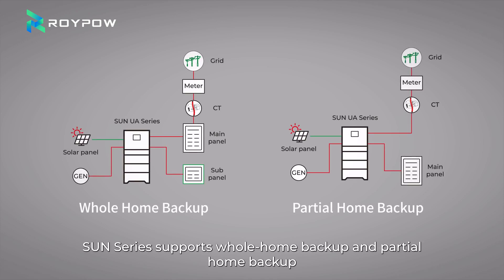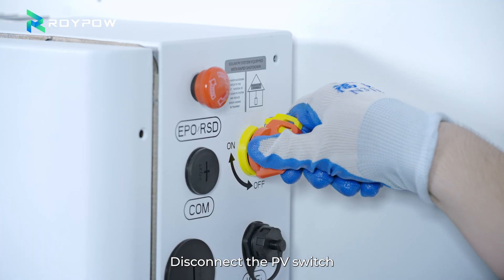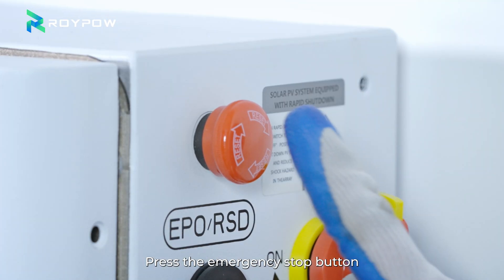Sun series supports whole home backup and partial home backup. Disconnect the PV switch. Press the emergency stop button.